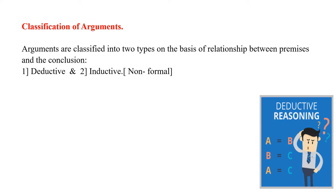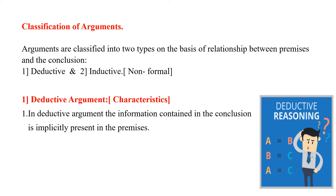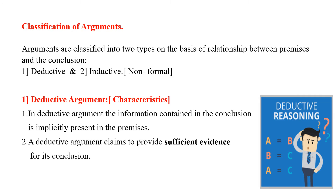This argument states that the conclusion is A equals C. We concluded that A equals C because we had sufficient information: A equals B and B equals C. The information provided was sufficient enough to prove the conclusion. Now we will see the characteristics of deductive argument. First, in a deductive argument, the information contained in the conclusion is implicitly present in the premises. Second, a deductive argument claims to provide sufficient evidence for its conclusion.